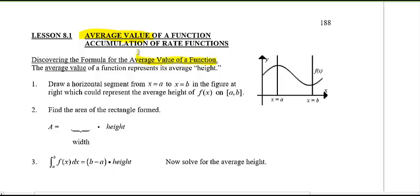The average value of a function really just represents the average height of the function over an interval. If you look at the interval from x = a to x = b, the average height would be that horizontal line segment you draw. Maybe the average is right in the middle — I'll call that f_av, or f average.